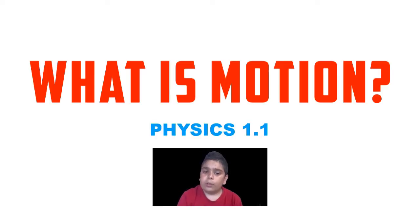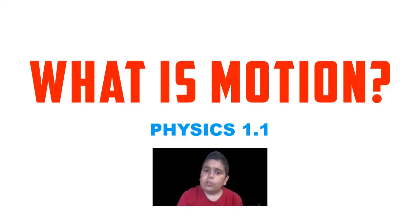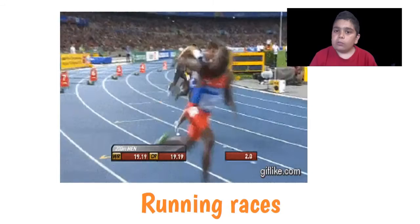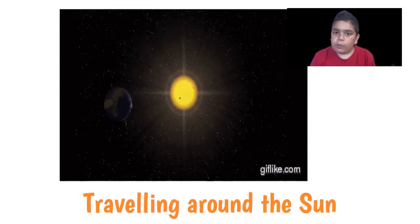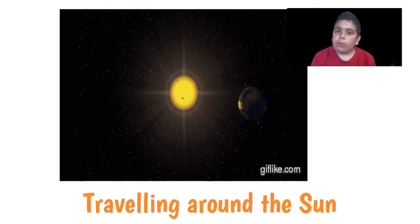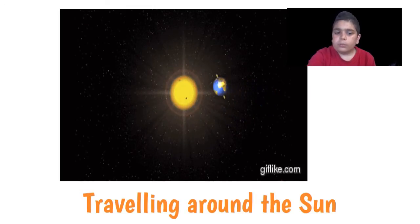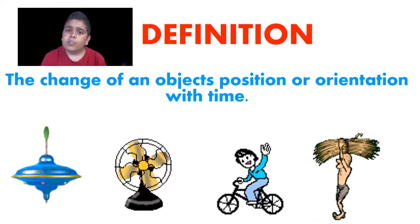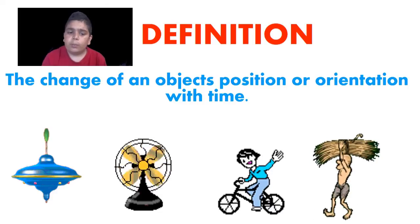So to begin, a good starting point for this video would be: what is motion? Motion dominates our lives, whether it's running after camels, running races, or travelling around the sun. Motion is everywhere, and therefore it is an important part of physics. The definition of motion we'll use in this series is that motion is the change of an object's position or orientation with time.